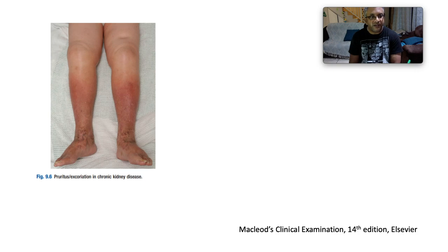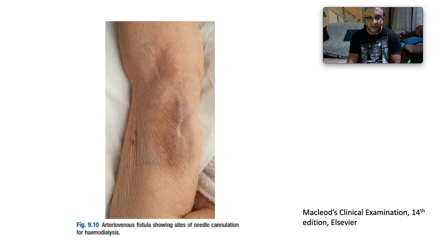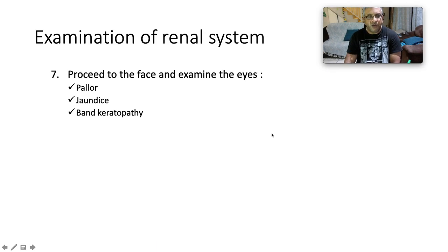Here is a picture showing pruritus and excoriation in the lower limbs associated with chronic kidney disease. Here is a picture of Terry's nails — half-and-half nails — with the distal half hyperpigmented and the proximal half hypopigmented. This is an example of an arteriovenous fistula showing sites of needle cannulation for haemodialysis.